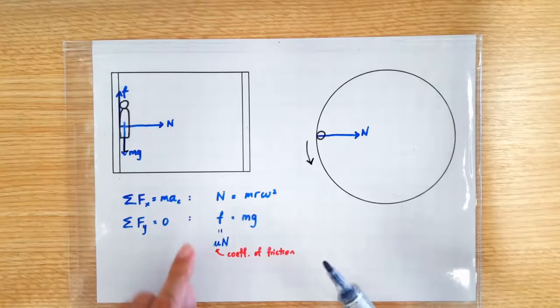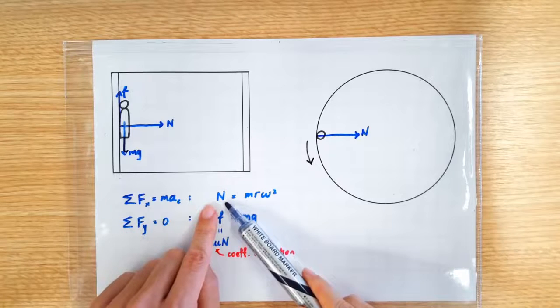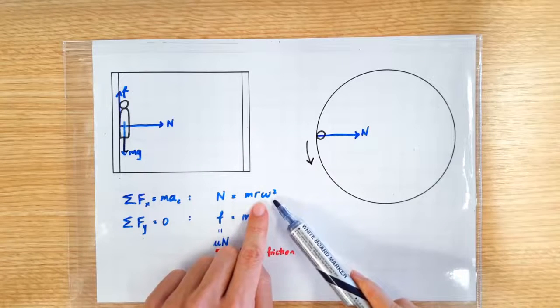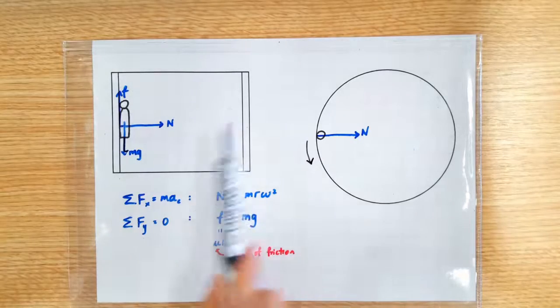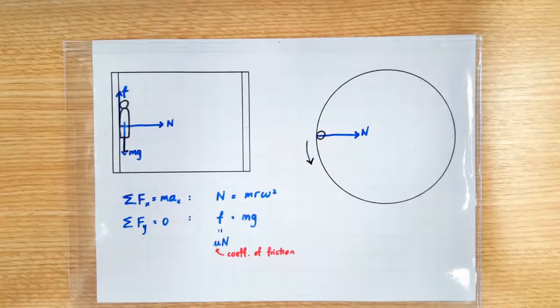So you see, in order for friction to be large enough, we need the normal contact force to be large enough, which means we need the angular velocity to be large enough. So, the drum must be spinning fast enough before the frictional force can be large enough to hold the weight of the person.